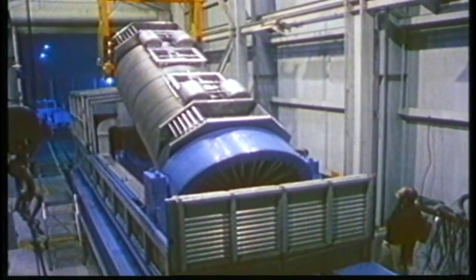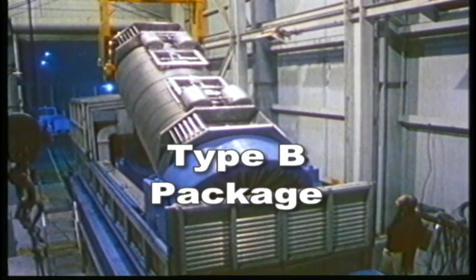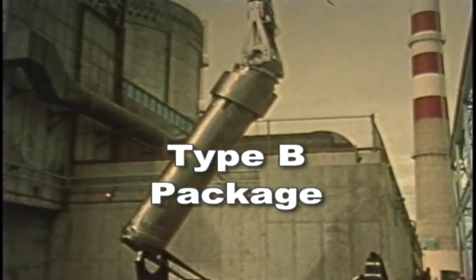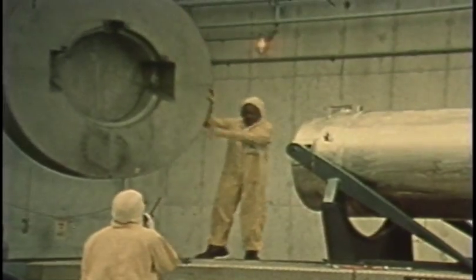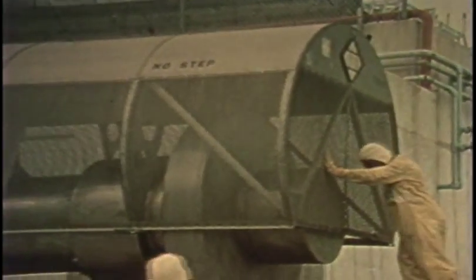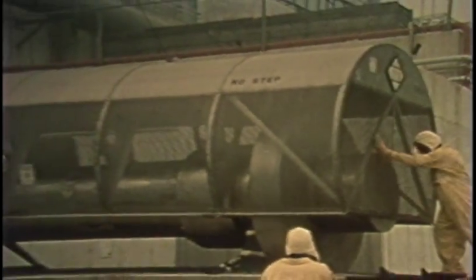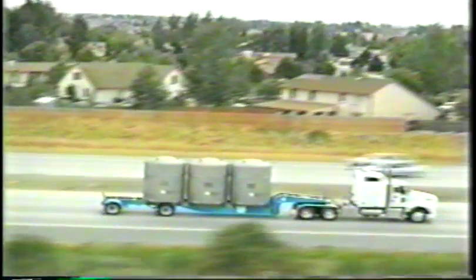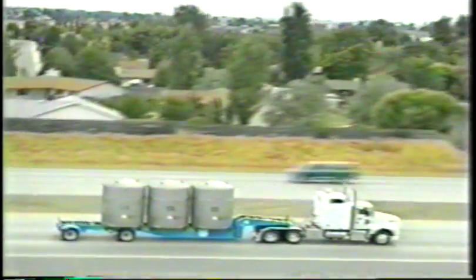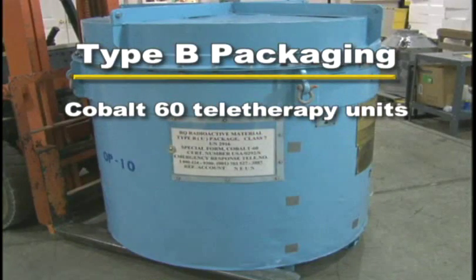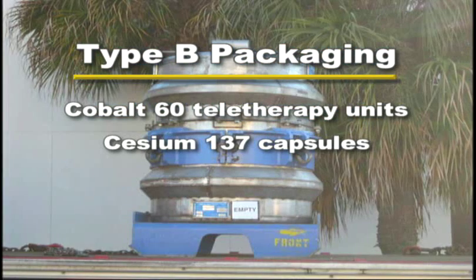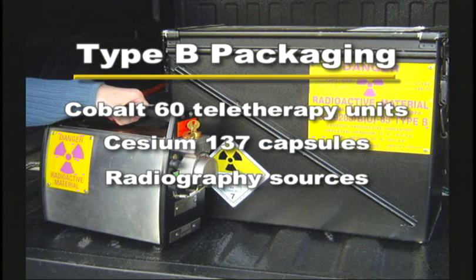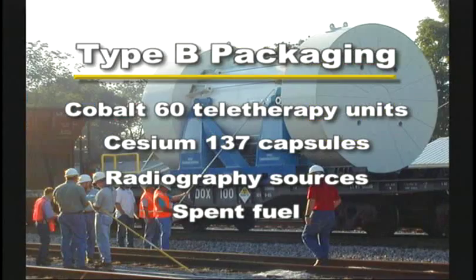A major step up from the Type A package is the Type B package. Type B packages are the strongest and most specially designed type of packaging, often referred to as shipping casks. Examples of materials transported in Type B packages include Cobalt-60 teletherapy units used for treating cancer, Cesium-137 capsules used to sterilize medical equipment, radiography sources used for non-destructive testing, and spent fuel from nuclear power generating facilities.